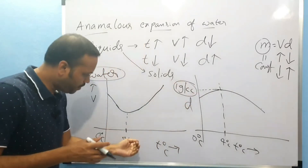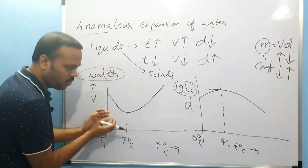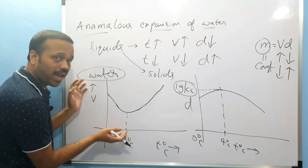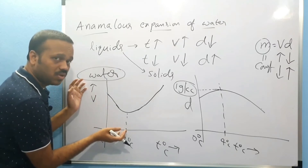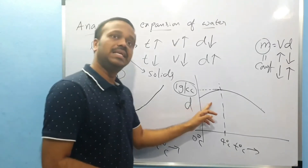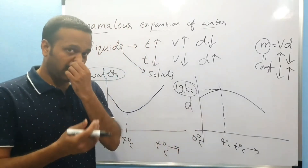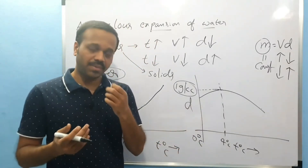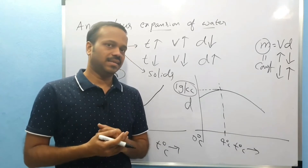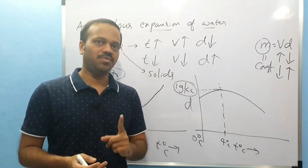Because below 4 degrees, if you decrease the temperature, water expands. So density decreases below 4 degrees. Below 4 degrees, if you decrease the temperature, density decreases. This is the anomalous expansion of water.